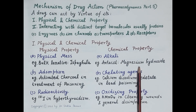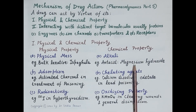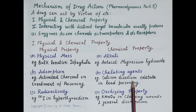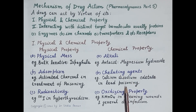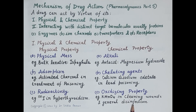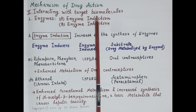Now let's discuss drugs which produce their action because of chemical properties. First is magnesium hydroxide — it is alkaline in nature and neutralizes acid, so it is used as an antacid to treat stomach acidity. Another drug is calcium disodium edetate, a chelating agent that forms stable water-soluble complexes with certain metals, which are easily excreted, making it useful in lead poisoning. Another example is potassium permanganate, used in cleaning wounds and general disinfection because of its oxidizing properties.